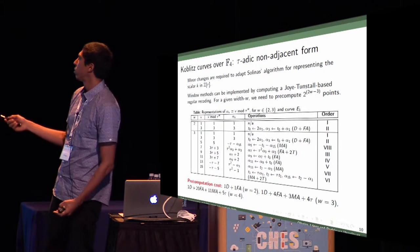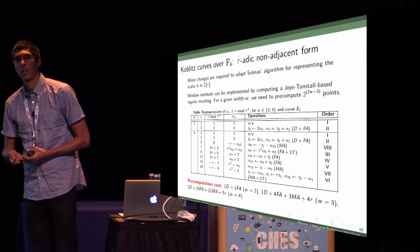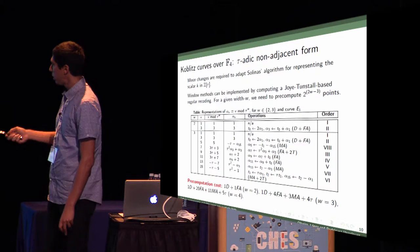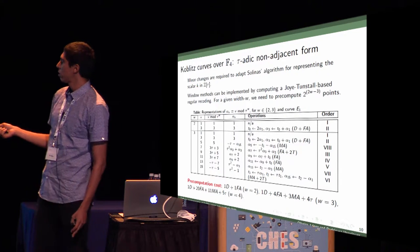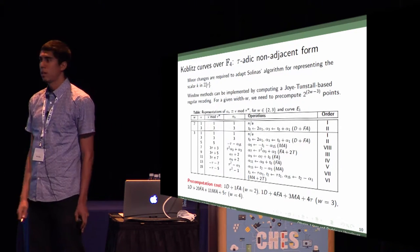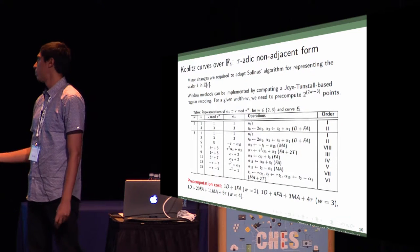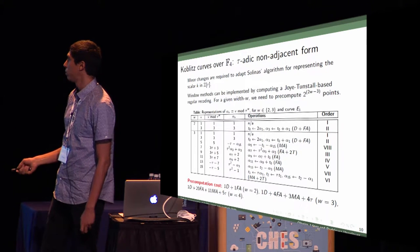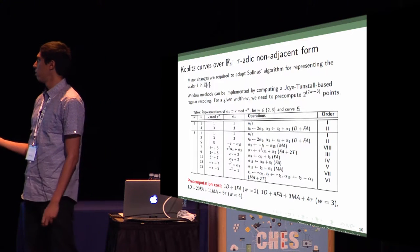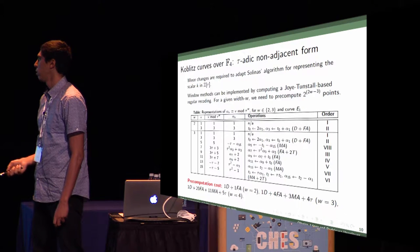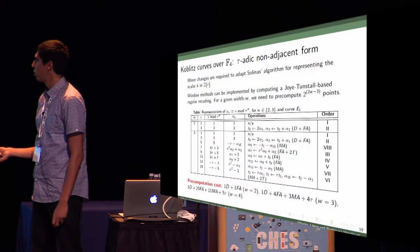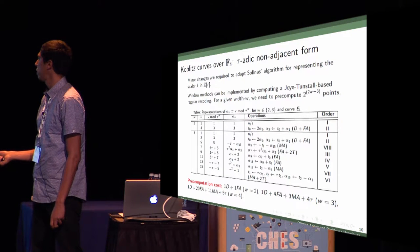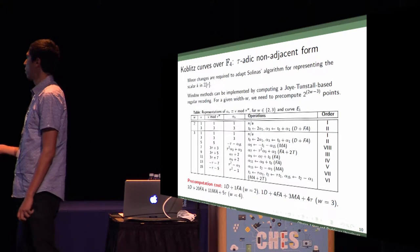We need to precompute in the case of left-to-right scalar multiplication. We need to precompute these points here. This is not considered an optimal form of precomputing the points. We designed this by hand; maybe there's an optimal number. This is the precomputation cost for width 2, which is one doubling plus one full addition. For width 3, we have one doubling, four full additions, three mixed additions, and four applications of tau.